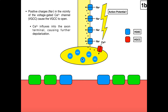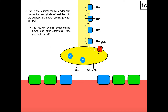Now in the end bulb, there are vesicles containing the neurotransmitter acetylcholine. Normally these vesicles will just stay inside the end bulb and do nothing. But once these voltage-gated calcium channels open and calcium influxes, we see a series of events that allow the vesicle to fuse with the membrane and dump that acetylcholine into this synapse — the space between this axon and the motor end plate. In the context of muscle, this synapse is called the neuromuscular junction, or NMJ. The vesicles exocytose their contents — that is, acetylcholine — into the NMJ, and they diffuse down their concentration gradient toward the motor end plate.